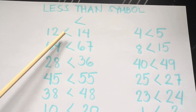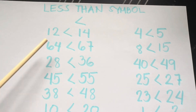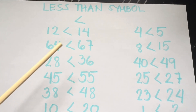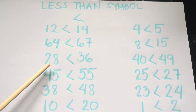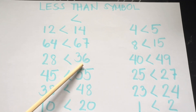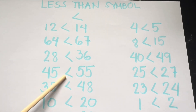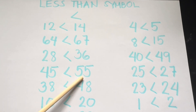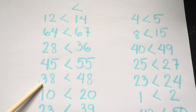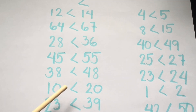Twelve is less than fourteen. Sixty-four is less than sixty-seven. Twenty-eight is less than thirty-six. Forty-five is less than fifty-five. Thirty-eight is less than forty-eight.